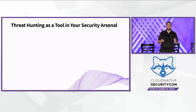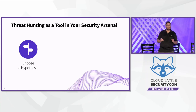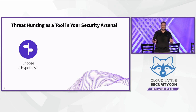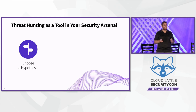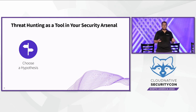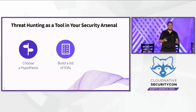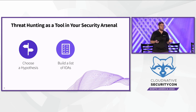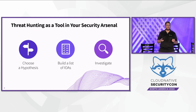Threat hunting is divided into three steps. The first step is to choose a concrete hypothesis, an environment, and the threat actor's motivation. For example, an environment can be all your buckets in GCP and a threat actor's motivation can be to exfiltrate all your sensitive data from those buckets. It's important to understand there are many potential hypotheses and you should choose the most relevant ones to your organization. The second step is to build a list of potential indicators of attack that you can identify in the relevant logs. The third step is to take the indicators you found in your environment and investigate them.